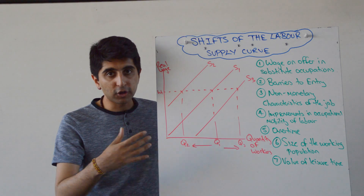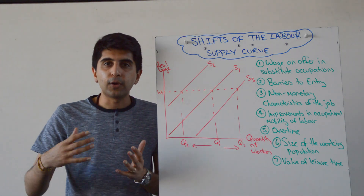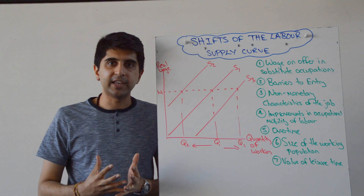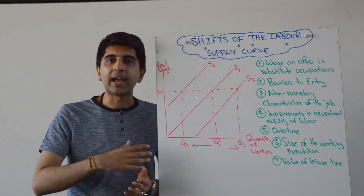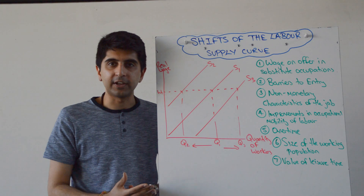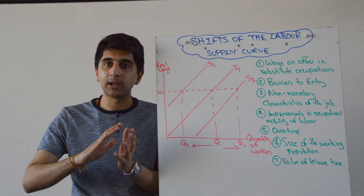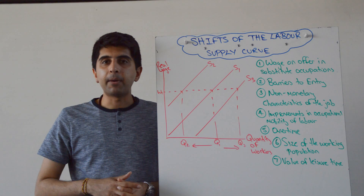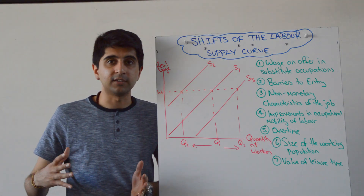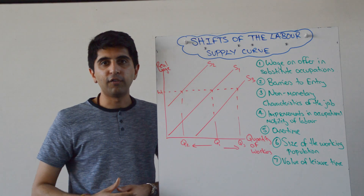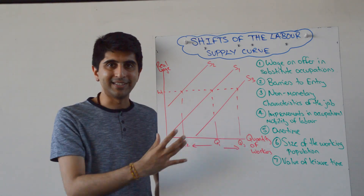An improvement in occupational mobility of labour will shift the supply curve to the right. If more workers actually get qualifications or get the skills required to enter a given profession, that is going to increase supply in that profession. Or maybe the workforce generally has become more educated and more skilled, thereby improving the ability of workers to enter numerous professions — shifting the supply of labour curve to the right in those professions.